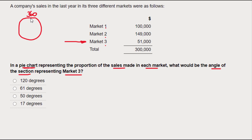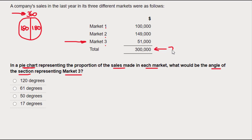Let's say there are only two markets, each half and half — well, one would be 180 degrees as would the other. So I need to fit these three figures into a pie chart to work out how many degrees they would be. The key here is knowing that a full pie chart is 360 degrees, and therefore this total figure of 300,000 represents 360 degrees.